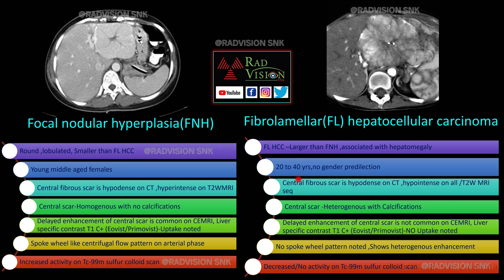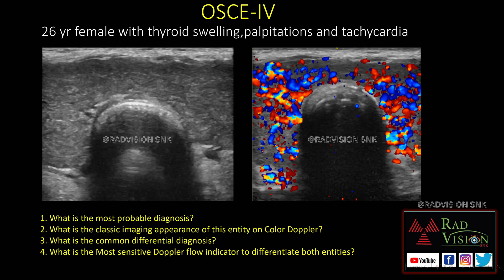On imaging, the central scar in focal nodular hyperplasia is homogeneously hypodense with no calcifications, whereas in fibrolamellar carcinoma it is heterogeneous with multiple calcifications. FNH shows a spoke-wheel arterial flow pattern on imaging. Technetium-99 sulfur colloid scans show increased activity in focal nodular hyperplasia but no activity in fibrolamellar carcinoma. These are the key differentiating points between focal nodular hyperplasia and fibrolamellar carcinoma.